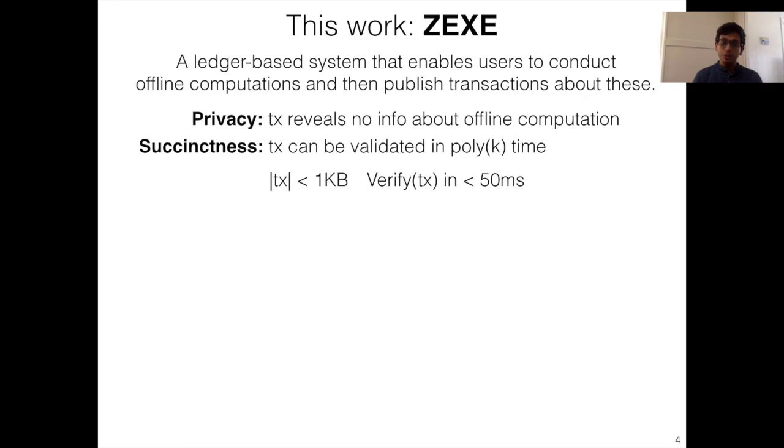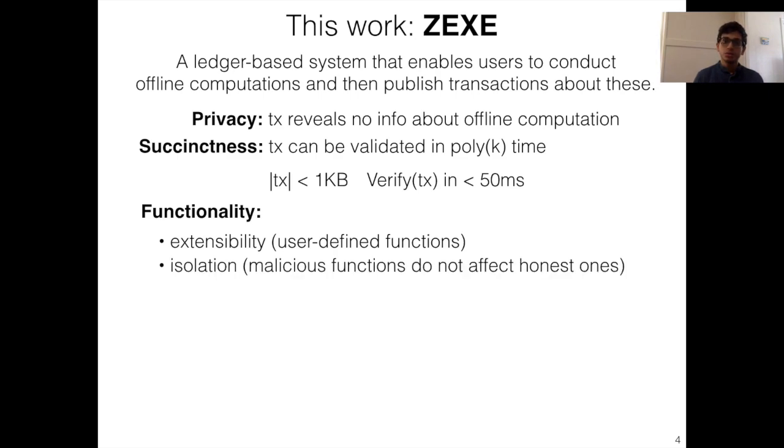Next, from a scalability perspective, what we guarantee is that the transaction can be validated in time that is independent of the underlying computation. Concretely, for our system, this means that transactions are of size less than a kilobyte and can be verified in less than 50 milliseconds, which is an excellent guarantee. Now, to achieve these strong privacy and scalability guarantees, we do not sacrifice functionality. Rather, our system allows users to define and execute arbitrary computations while still allowing these user-defined computations to interact in a secure manner.